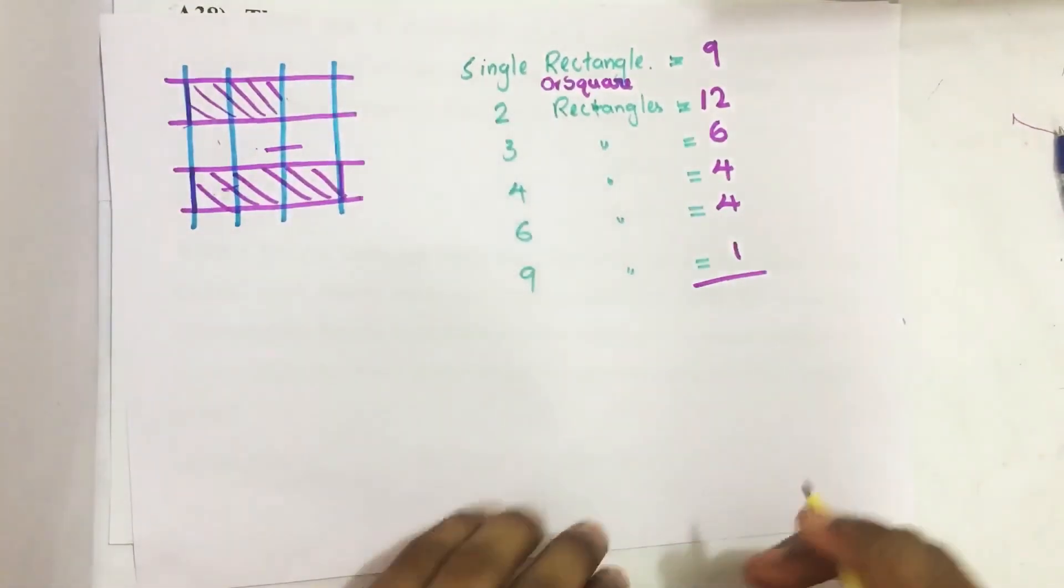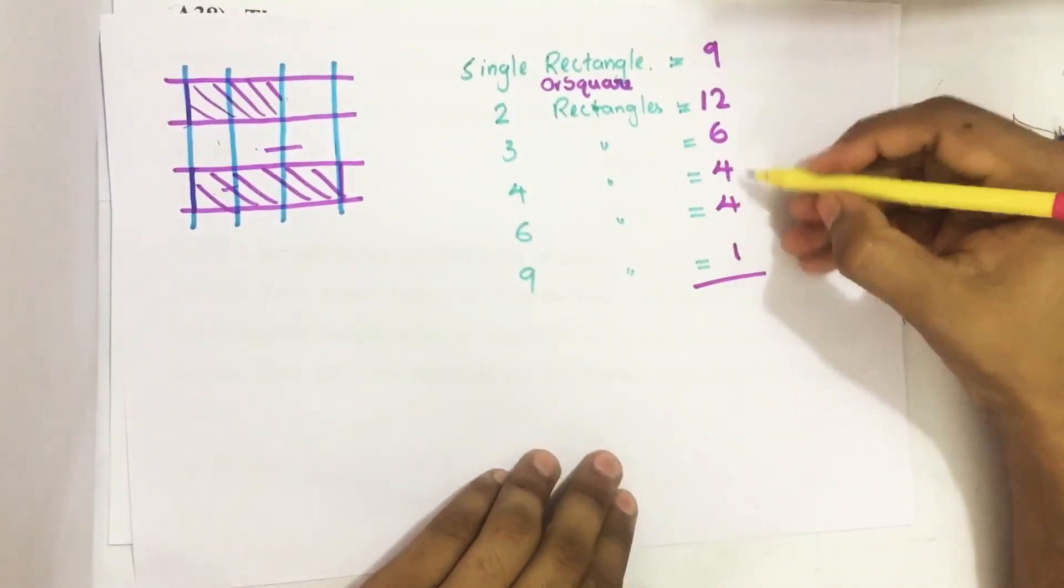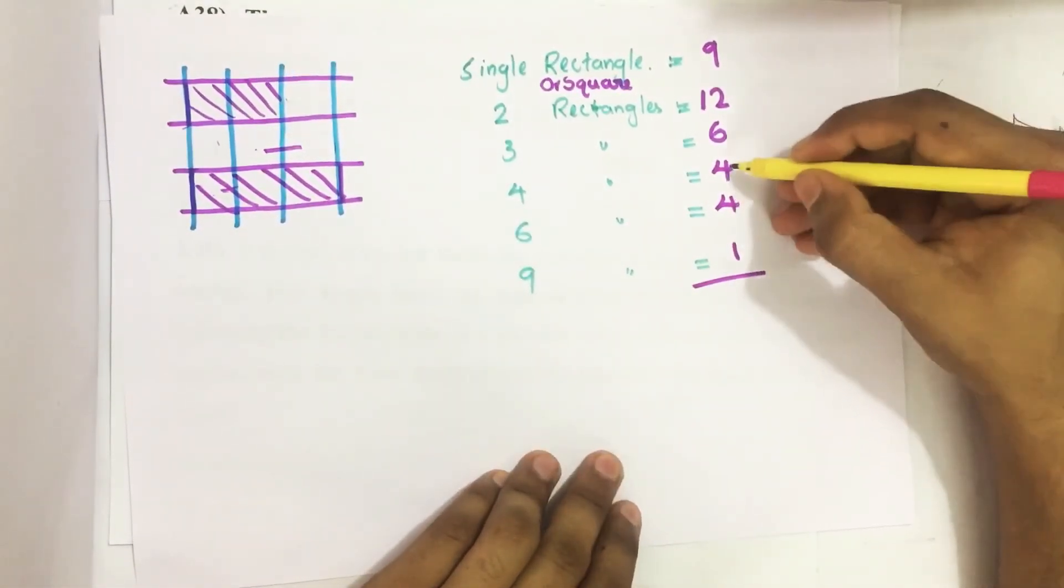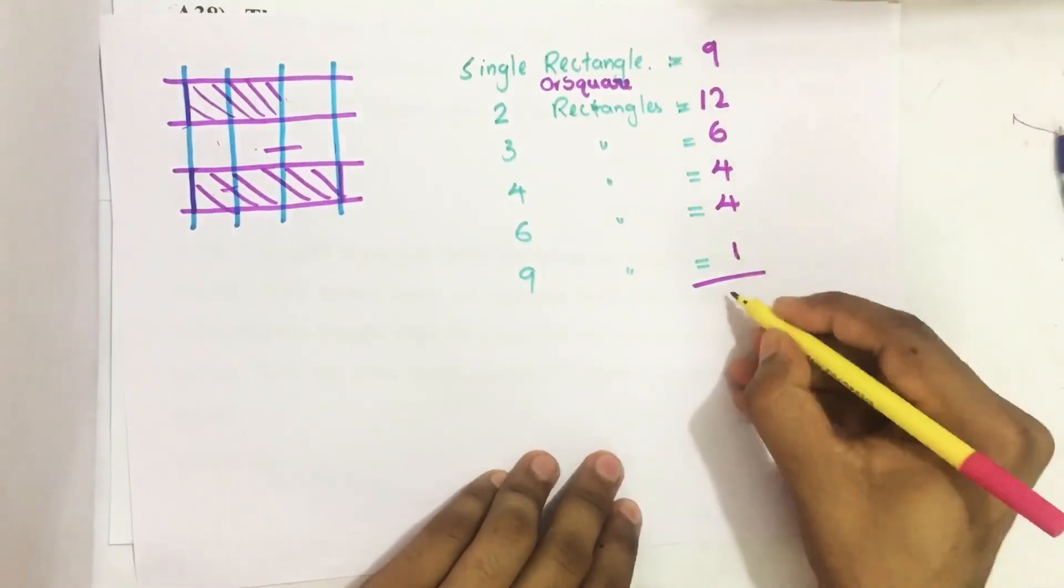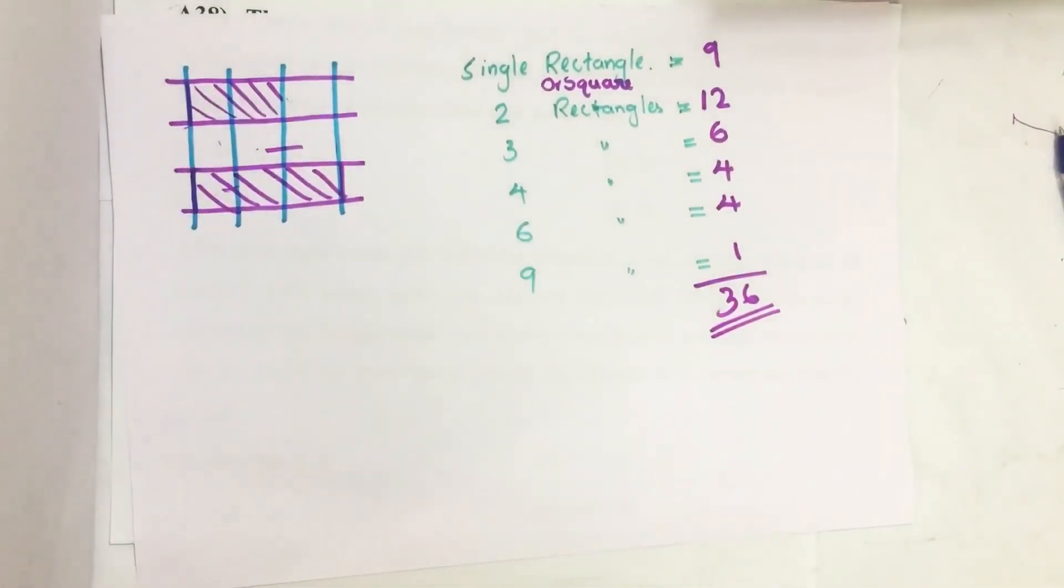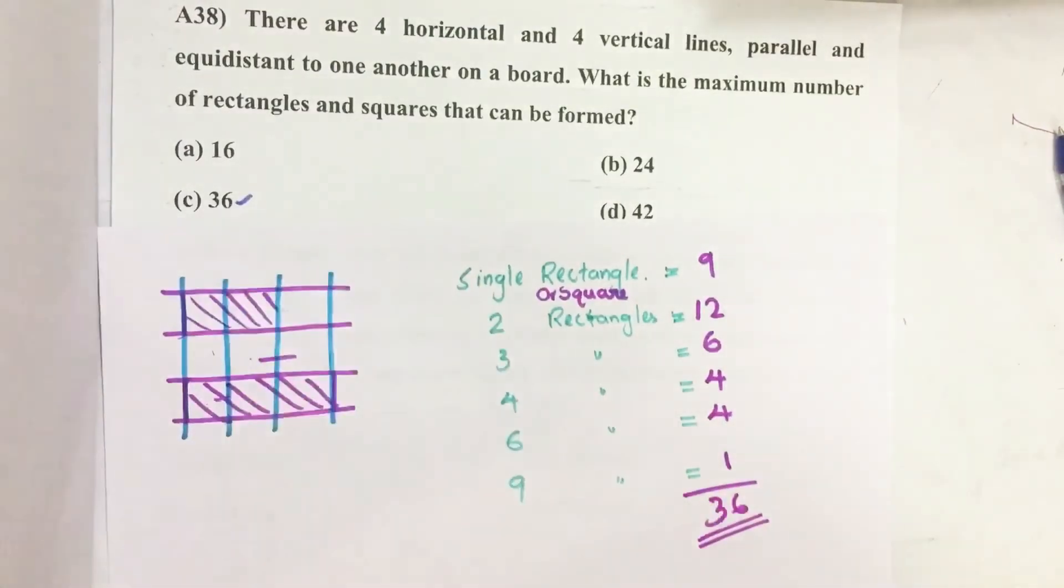Then total number of rectangles or squares in this figure equals one plus four, five, nine, eighteen, thirty—thirty-six such squares and rectangles are there. Our answer is option C, thirty-six.